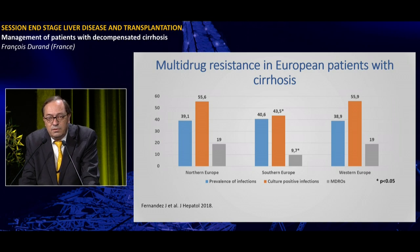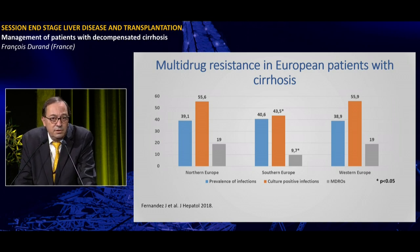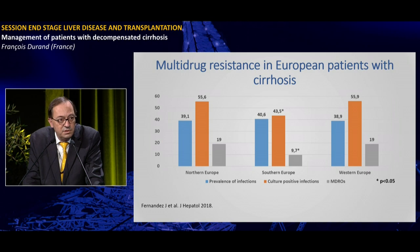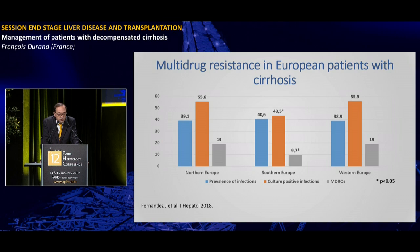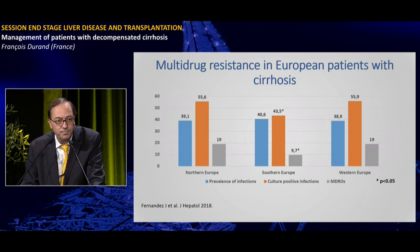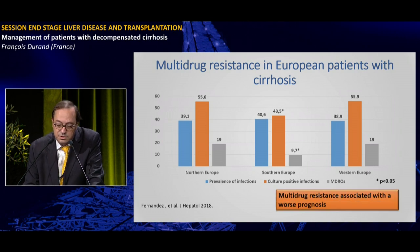An emerging problem is multidrug-resistant infection in Europe and the rest of the world. A very recent European study promoted by the CLIF showed the distribution and prevalence of infections, culture-positive infections, and multidrug-resistant infections across Northern, Southern, and Western Europe. The prevalence of infections was similar across regions, but culture-positive and multidrug-resistant infections were less common in Southern Europe. Multidrug-resistant infections had worse prognosis compared to other infections.